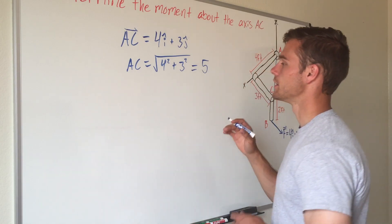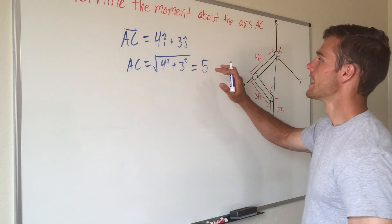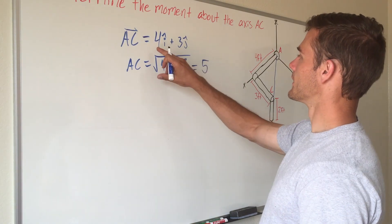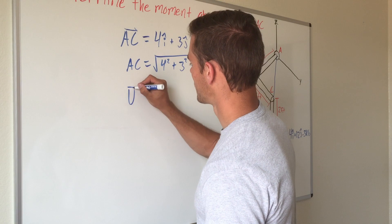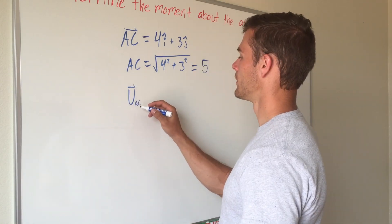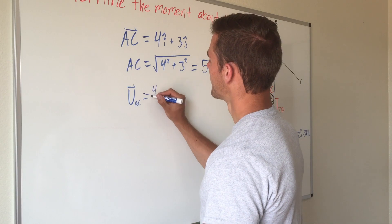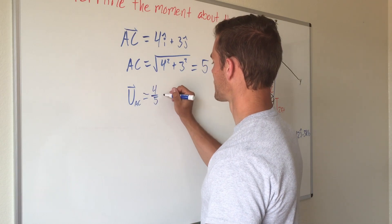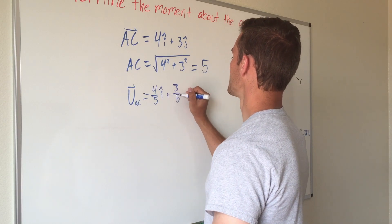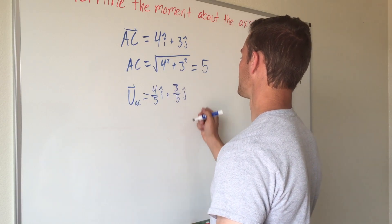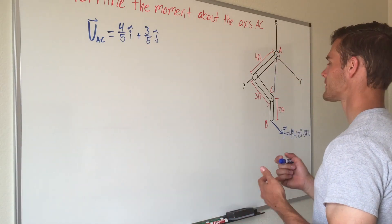So now if we want to make a unit vector, remember it's going to be the vector divided by its magnitude. We will divide this vector by its magnitude and we'll call that unit vector sub AC, and that will equal 4 fifths i plus 3 fifths j. I wrote it up here so that we have enough space to do everything else.